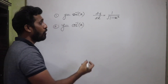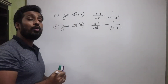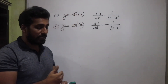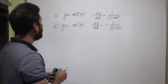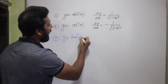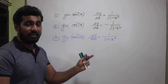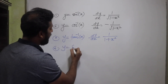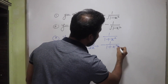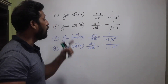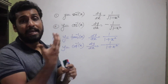The next function is y = tan⁻¹(x) and its derivative is 1 upon (1 + x²). The derivative of cot⁻¹(x) is −1 upon (1 + x²). So sin⁻¹ and cos⁻¹ form a pair, and tan⁻¹ and cot⁻¹ form a pair — the only difference in the formulas is the positive and negative sign.